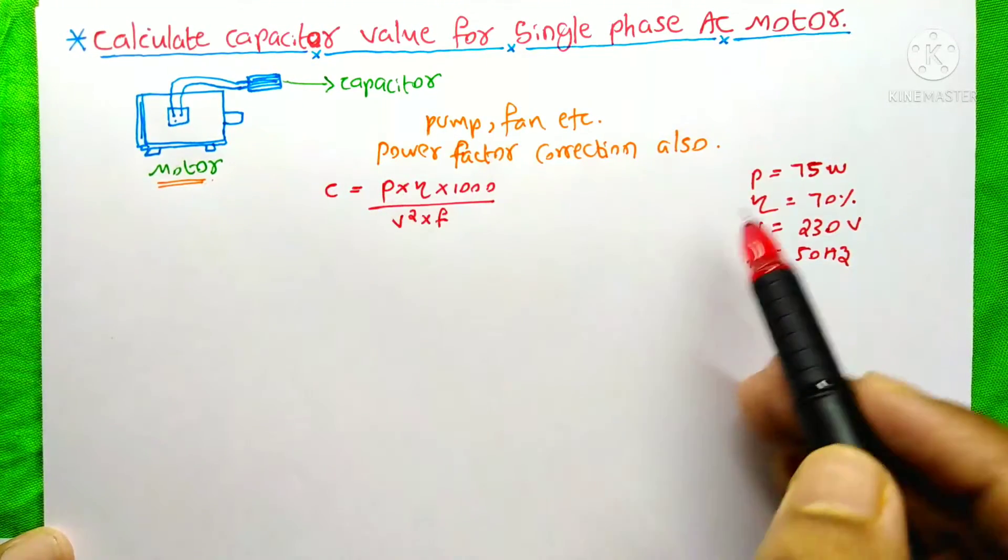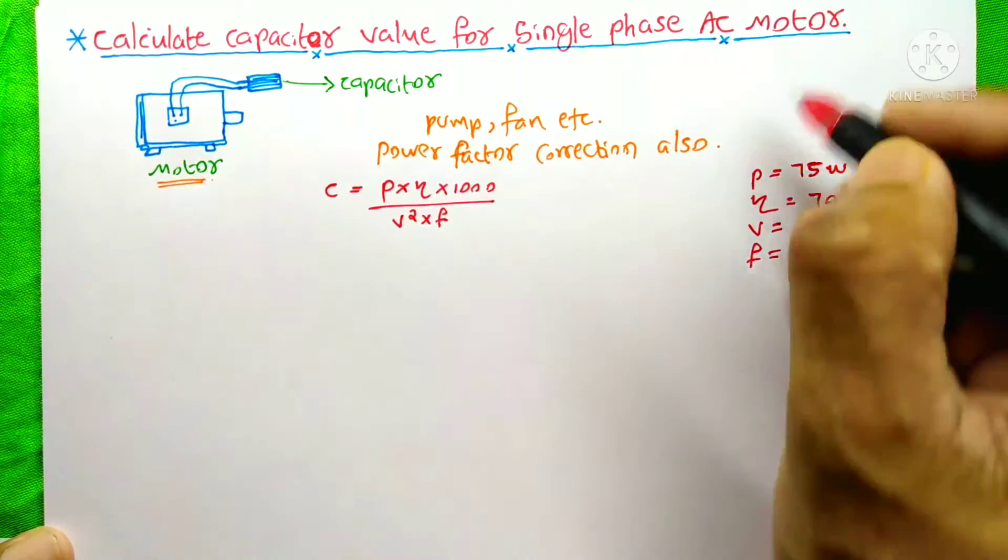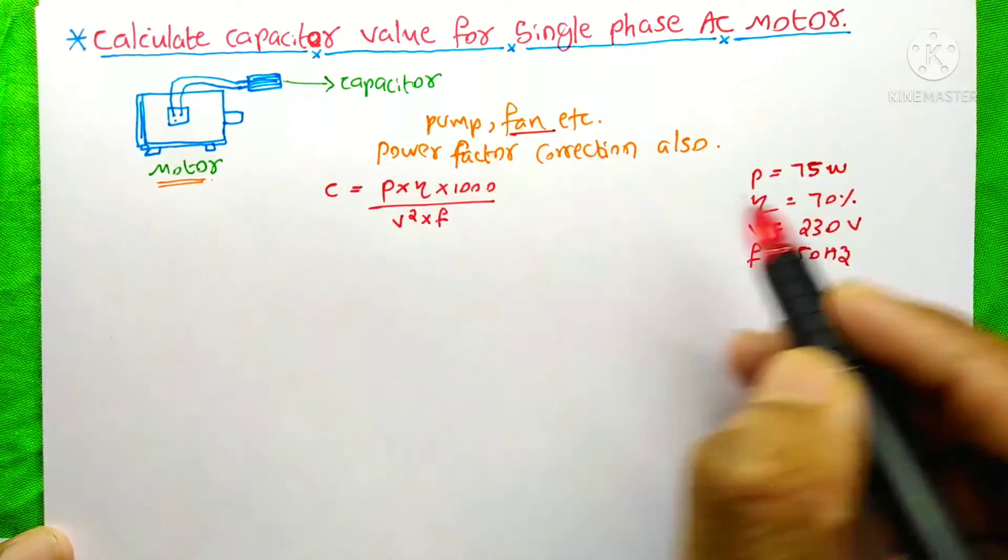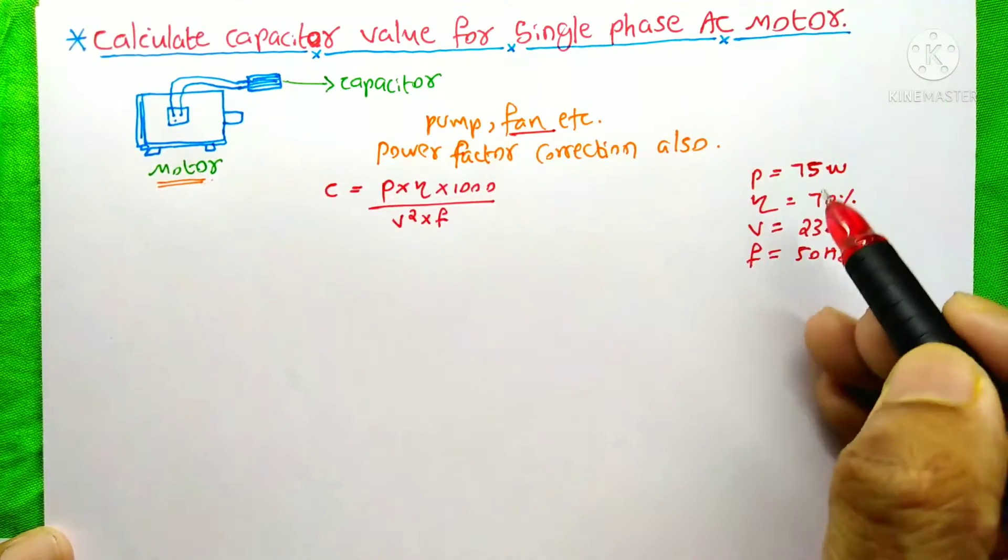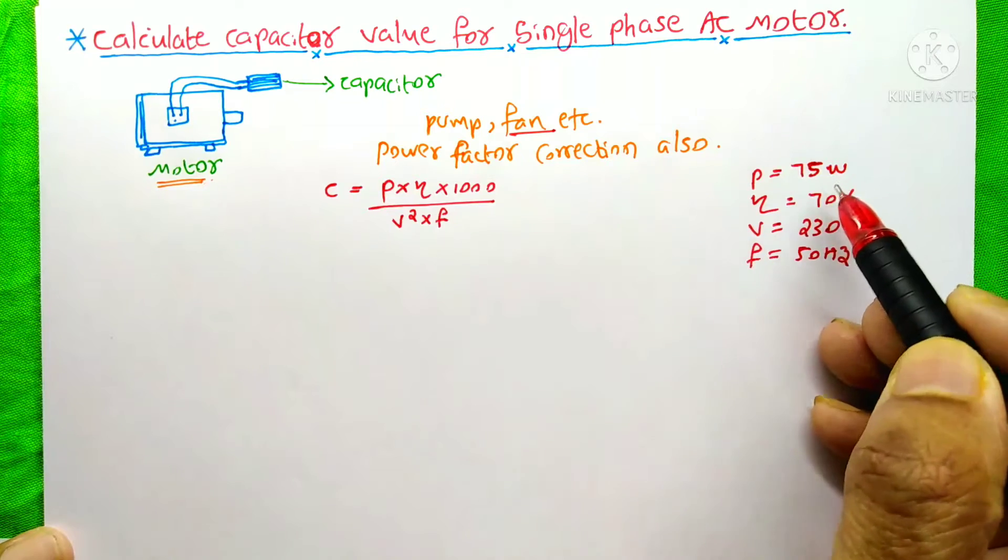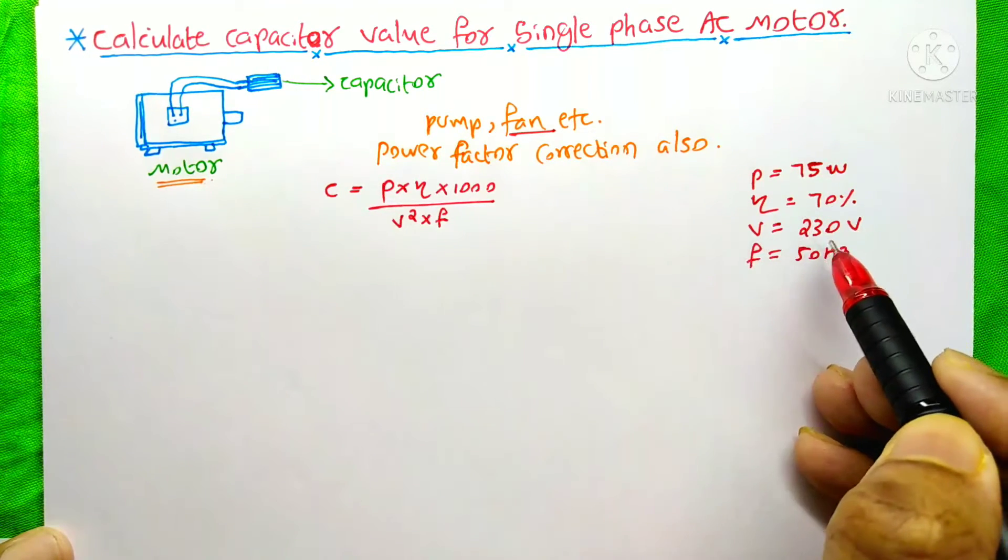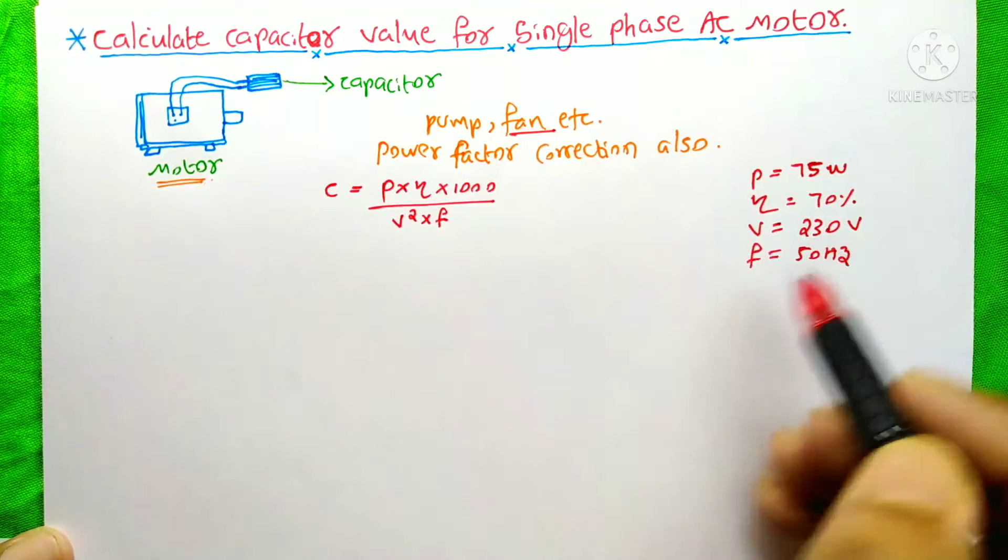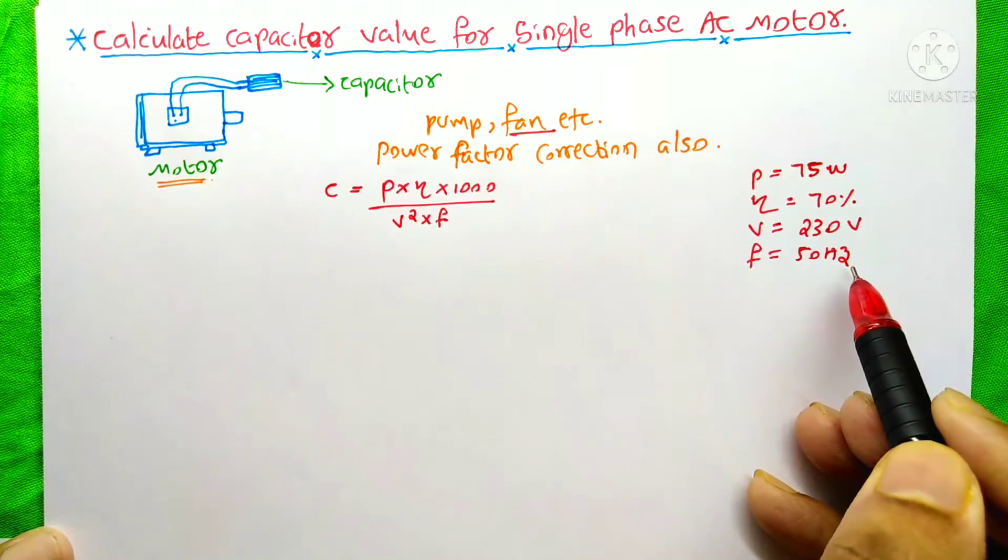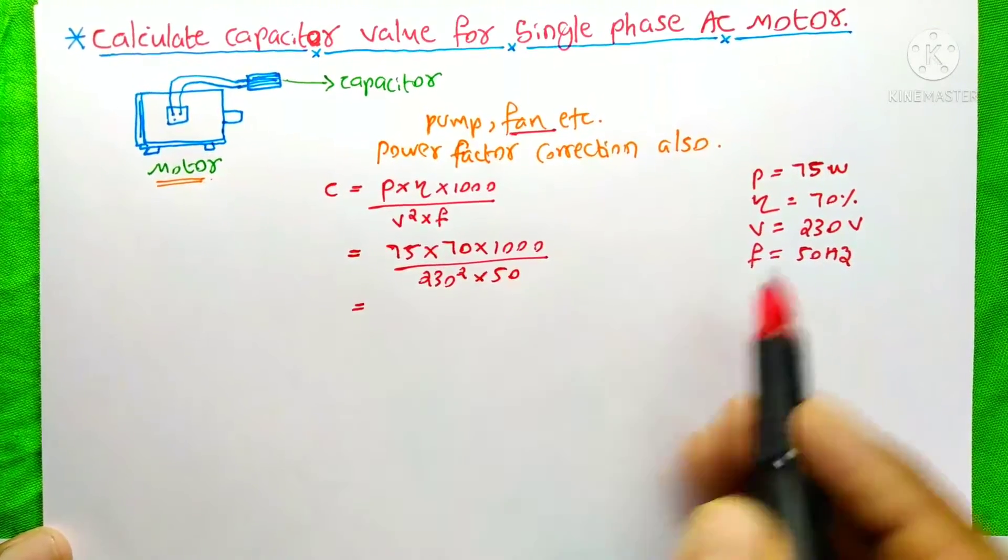Here I have taken an example of a ceiling fan. For that ceiling fan, the power is 75 watts, efficiency is 70 percent, voltage single-phase is 230 volts, and frequency is 50 Hertz.